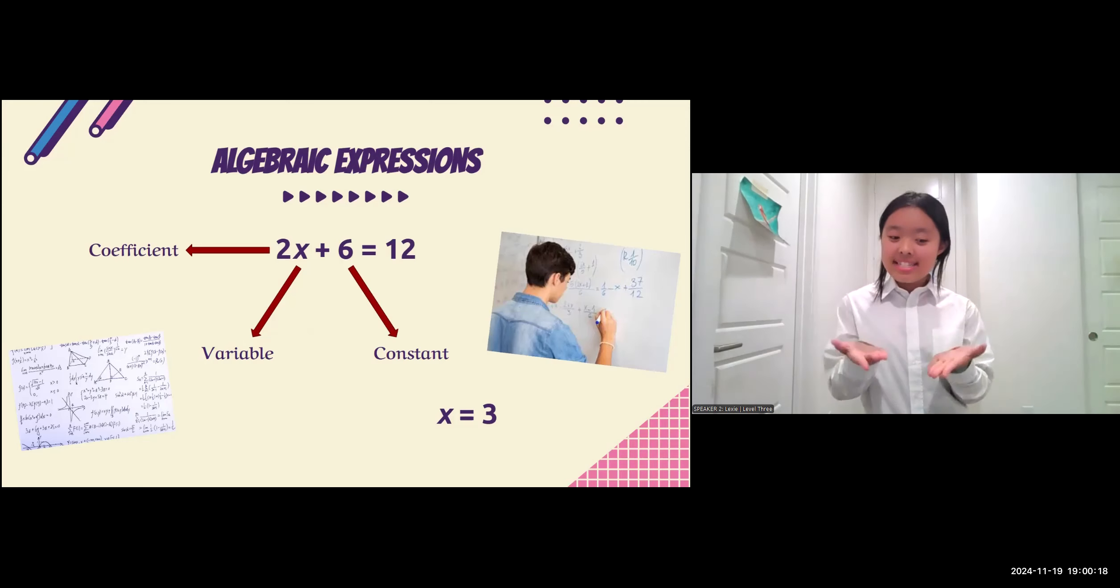All right, in this example, we'll have x equal the number 3. So, what do you do in this situation? Well, you would replace x with the number 3. Then, you would multiply 2 by 3 to get 6, because 2 is the coefficient.